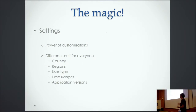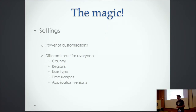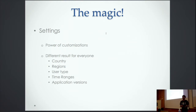The magic, we realized, was in the settings — the concept of a setting-type variation where we could do any sort of customization. We could show a different variation based on your country, your region, the type of user you are — whether you're new, registered, or a returning user. We can do it based on time ranges, so different weeks show different variations, and by application versions to slowly roll out features.